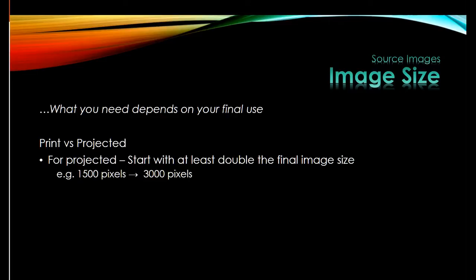Image size — well, it depends on what you're going to be doing with it. This comes down predominantly to prints versus projected. If you're doing projected or displaying on a computer screen, I generally recommend you start with about double the number of pixels you're going to have in your final image. For SIT you're looking at 1,500 pixels on the longest side, so you want about 3,000 in your original. It just makes life easier when you're doing masking — you're less likely to end up with jagged edges.